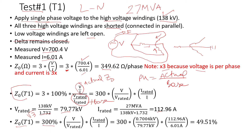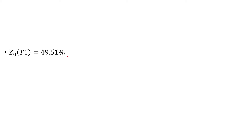Applying the equation: 300 × 0.7004 kV divided by 79.77 kV, times 112.96 amps divided by 6.01 amps — keeping units consistent so nothing cancels incorrectly. The zero sequence impedance obtained from Test One is 49.51 percent.